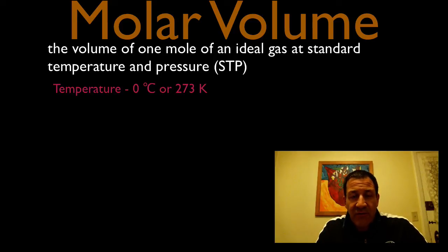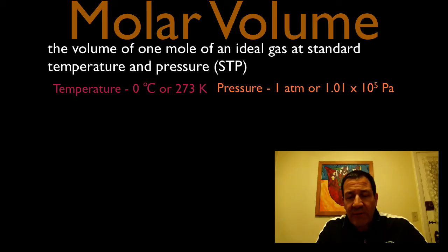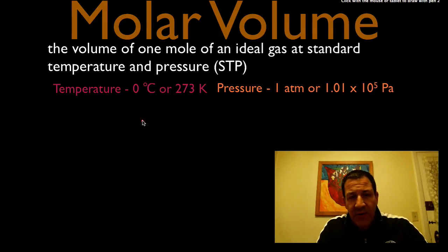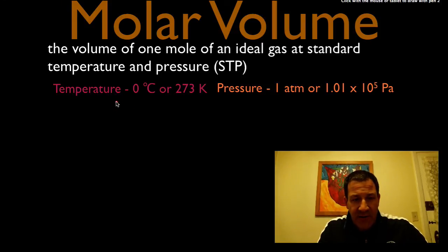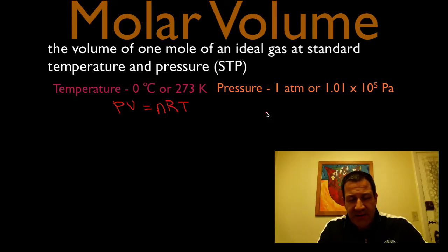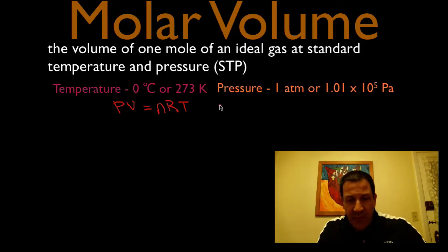When we use the ideal gas law, we're always going to use Kelvin. The pressure is either 1 atmosphere or 1.0 times 10 to the 5th pascals. Whether we use the atmosphere or the pascal depends on which gas constant we're using. We're going to do this problem both ways, using both gas constants.